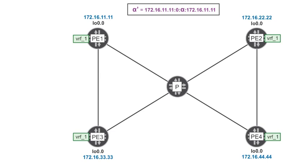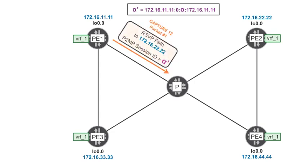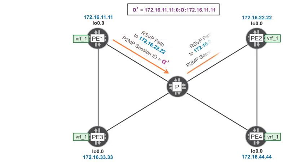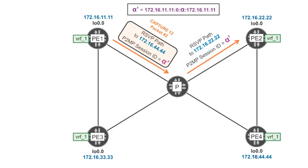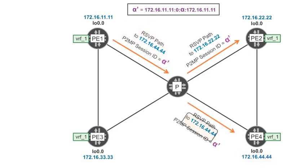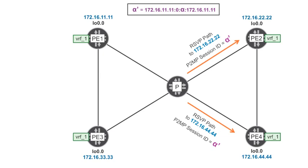Let's start with the sub-LSPs targeted to PE2 and PE4. PE1 sends path messages to PE2 and to PE4. These messages have something in common: alpha. Thanks to alpha, PE2 and PE4 figure out that PE1 uses this P-tunnel to transport multicast data in the context of VRF1. PE2 realizes that the tunnel is associated to VRF1 by correlating the alpha value in the RSVP signaling with the alpha value in the I-PMSI BGP auto-discovery route seen in the previous slide.